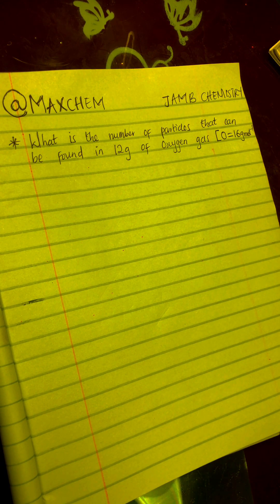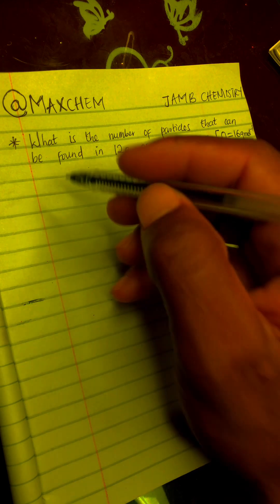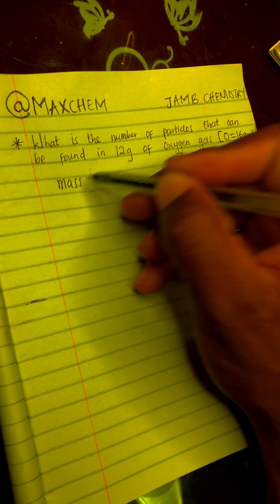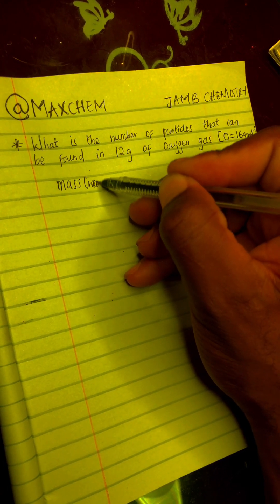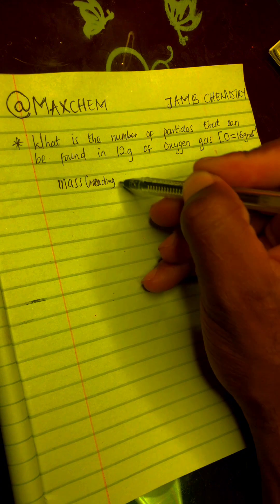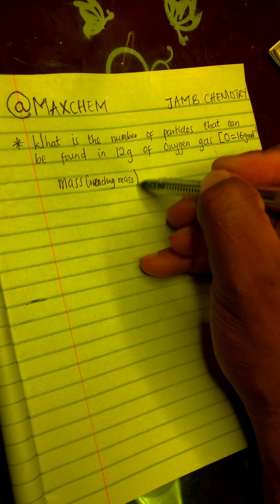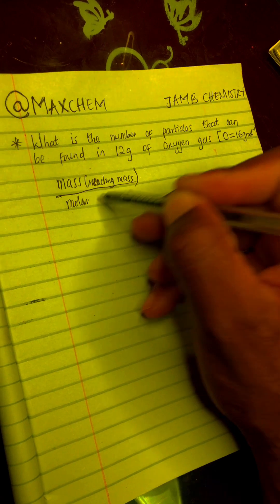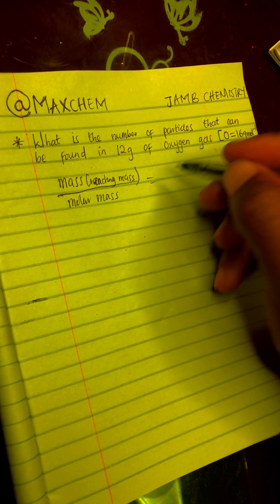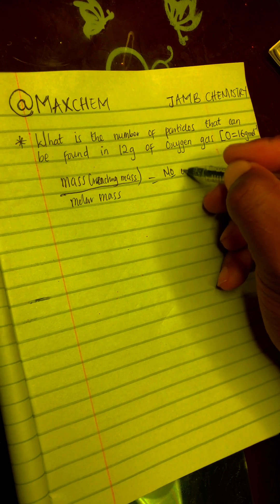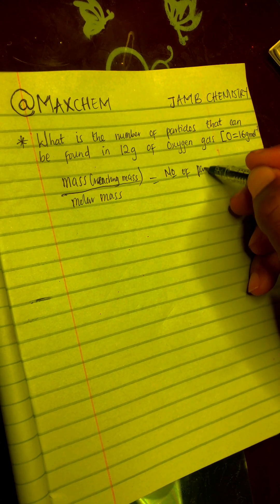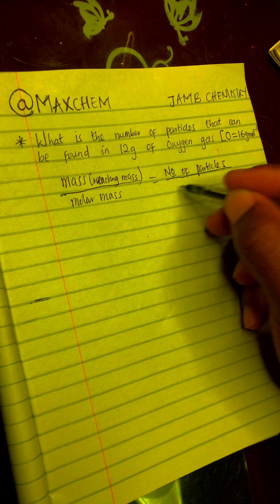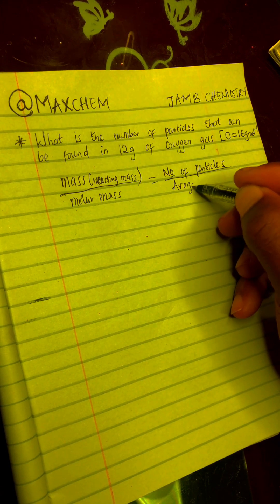Which formula will you use to solve this kind of question? You will use this particular formula that states mass or reactive mass, you can write it anyway, it is still the same mass. Mass or reactive mass over molar mass is equal to number of particles over Avogadro's constant.